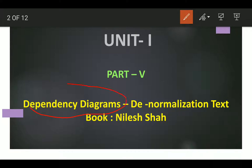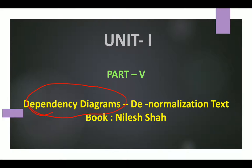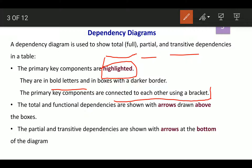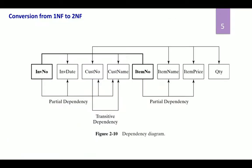Today's topic is dependency diagrams and denormalization. A dependency diagram is used to show the full, partial, and transitive dependencies that exist in a table. The primary key components are highlighted in bold letters and connected to each other using a bracket. Full and functional dependencies are shown with arrows drawn above the boxes, while partial and transitive dependencies are shown with arrows at the bottom of the diagram.